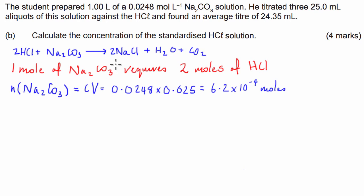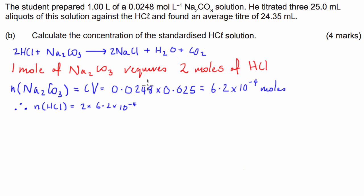From the molar ratio written above, we can then deduce: the number of moles of hydrochloric acid is equal to 2 times 6.2 times 10 to the negative 4, and that's going to equal 1.24 times 10 to the negative 3 moles of hydrochloric acid.